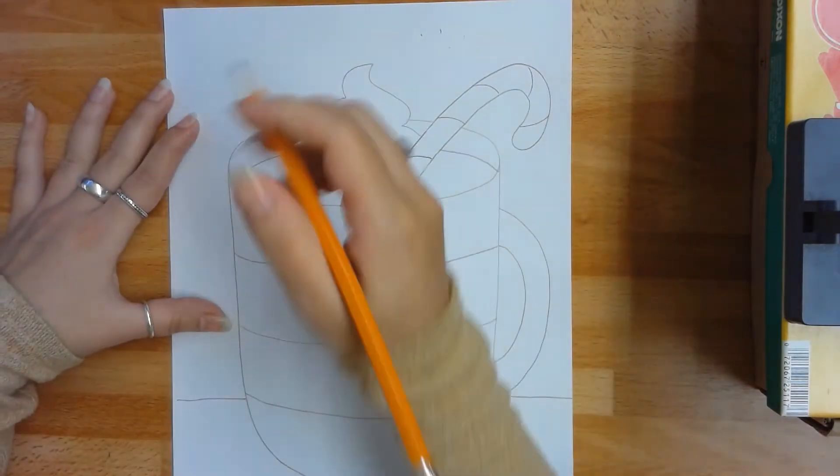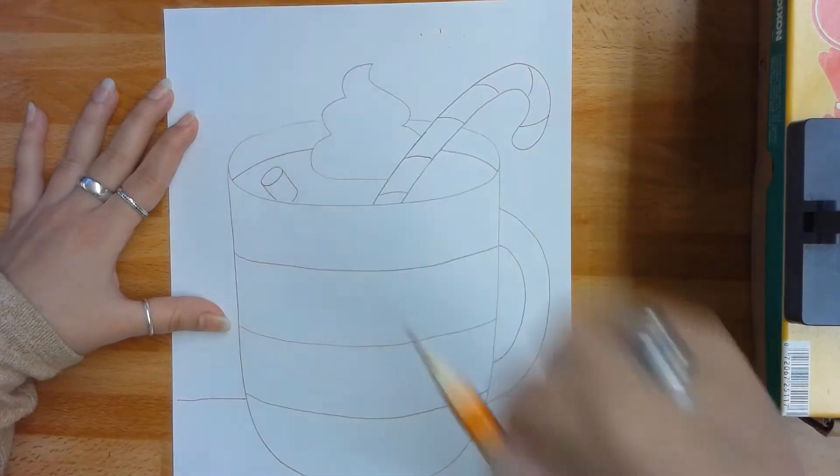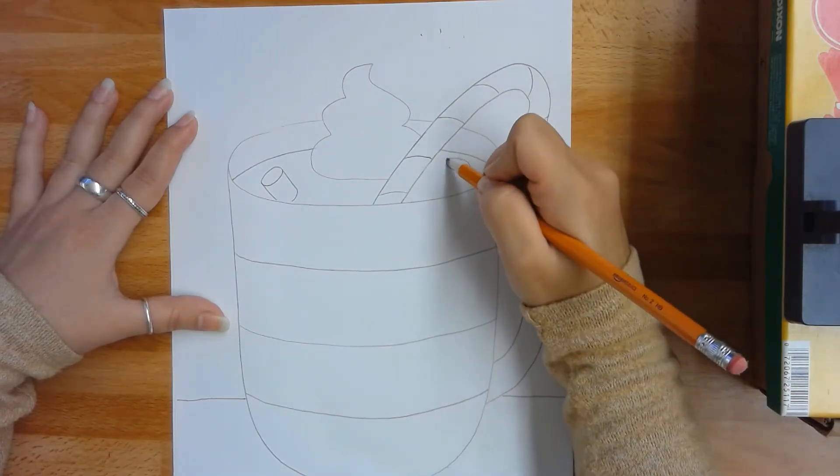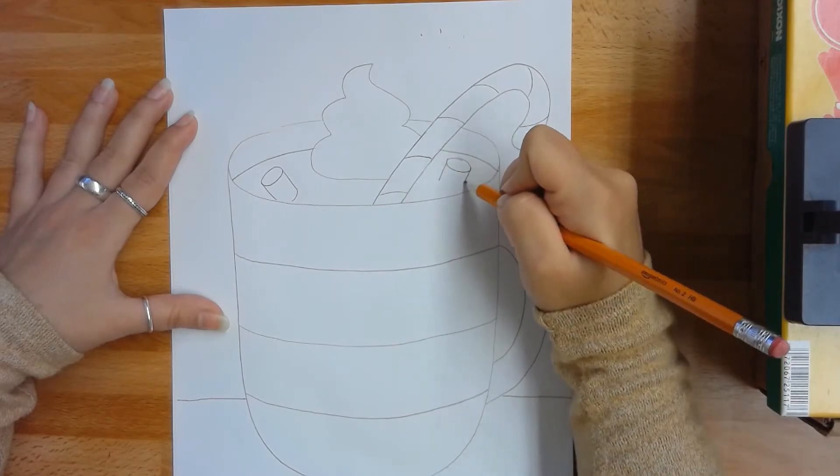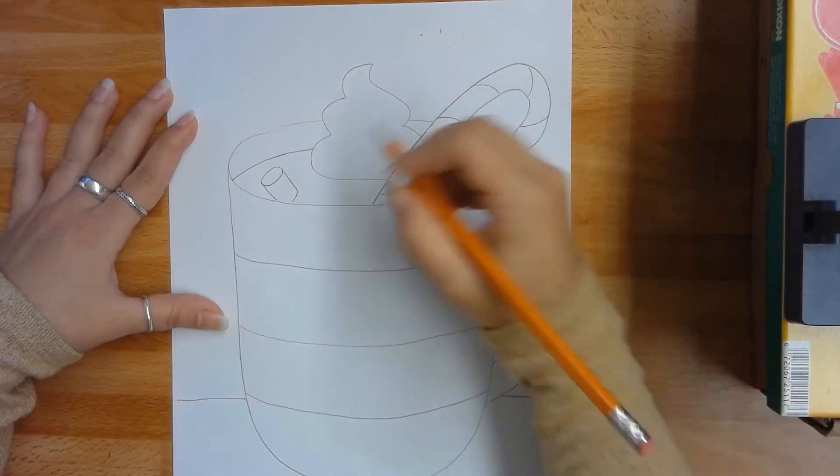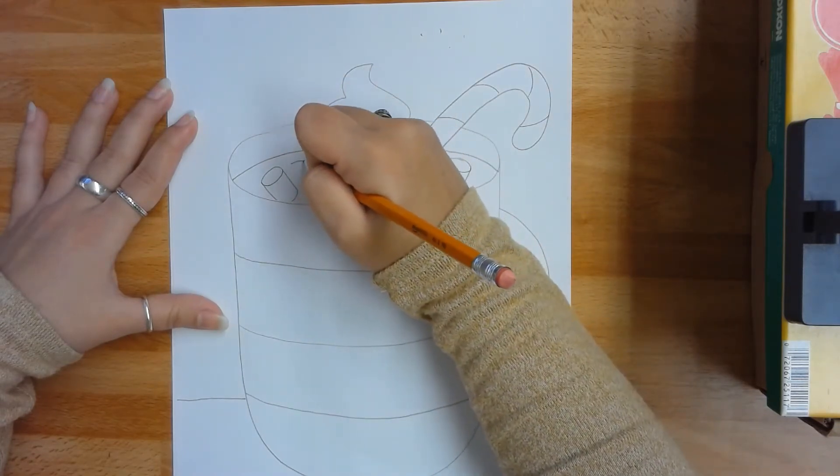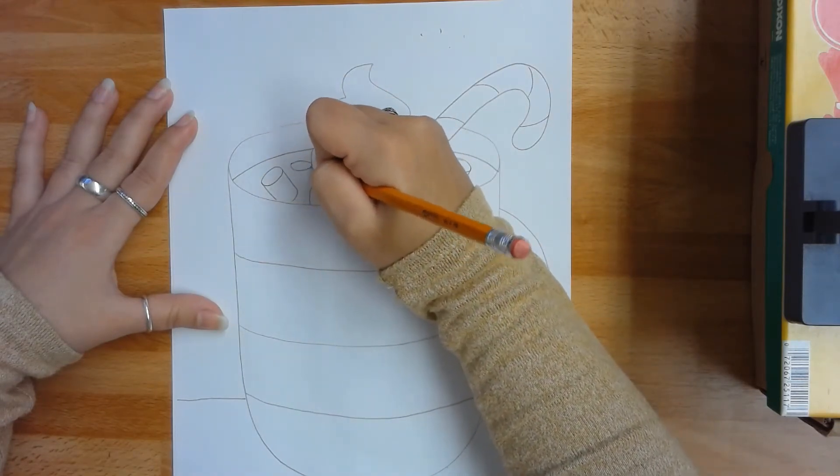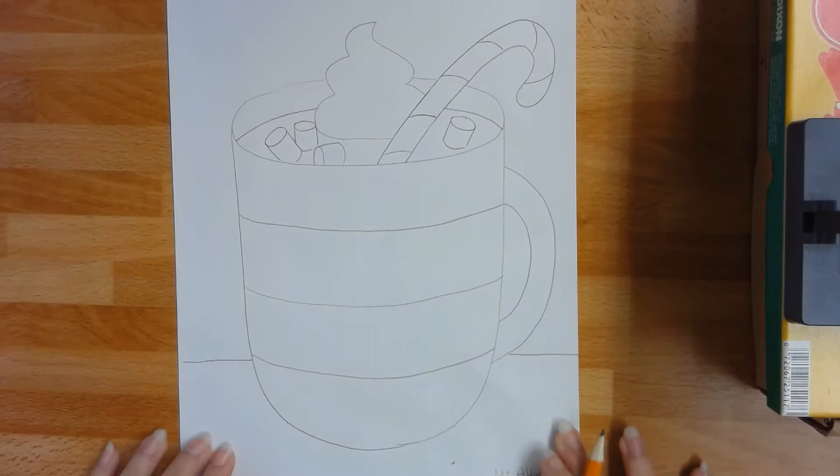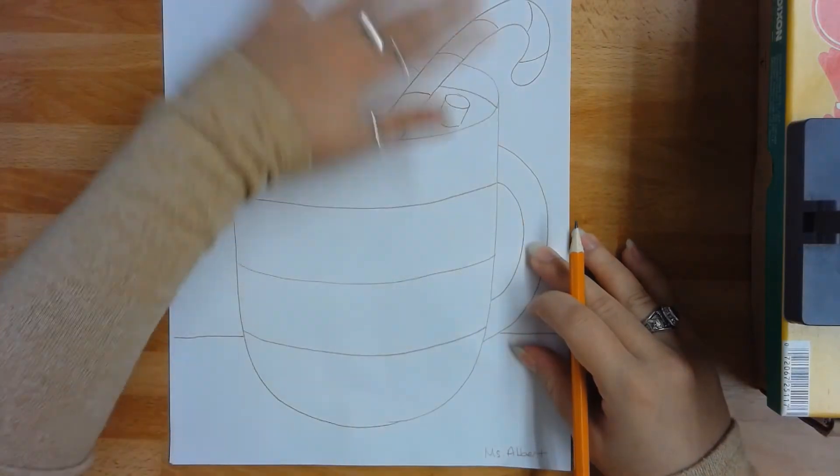And I think the last thing I'll add is some mini marshmallows. To make the mini marshmallows, all you do is draw a small oval, a line on each side, and a curved line on the bottom that matches this top curve. You can also add things to the table if you want to add extra little treats or candies. That's up to you.